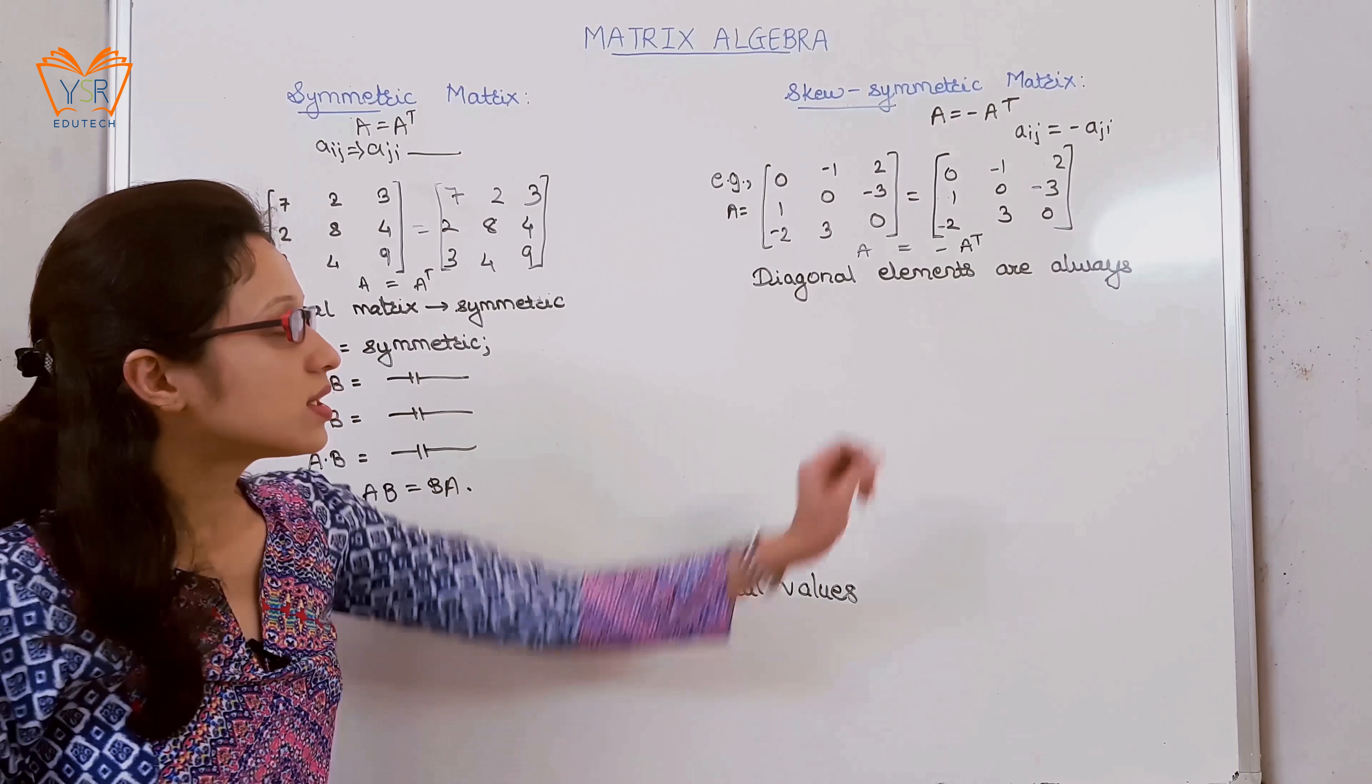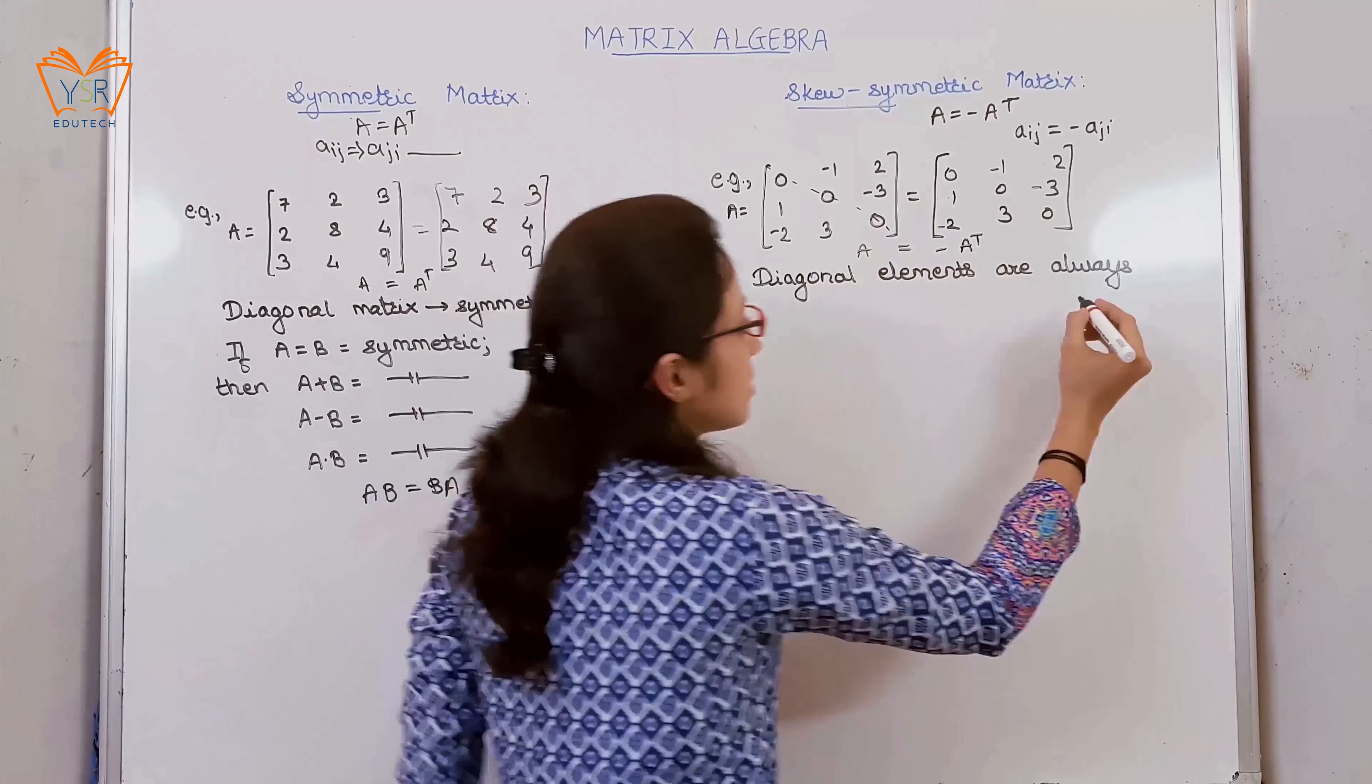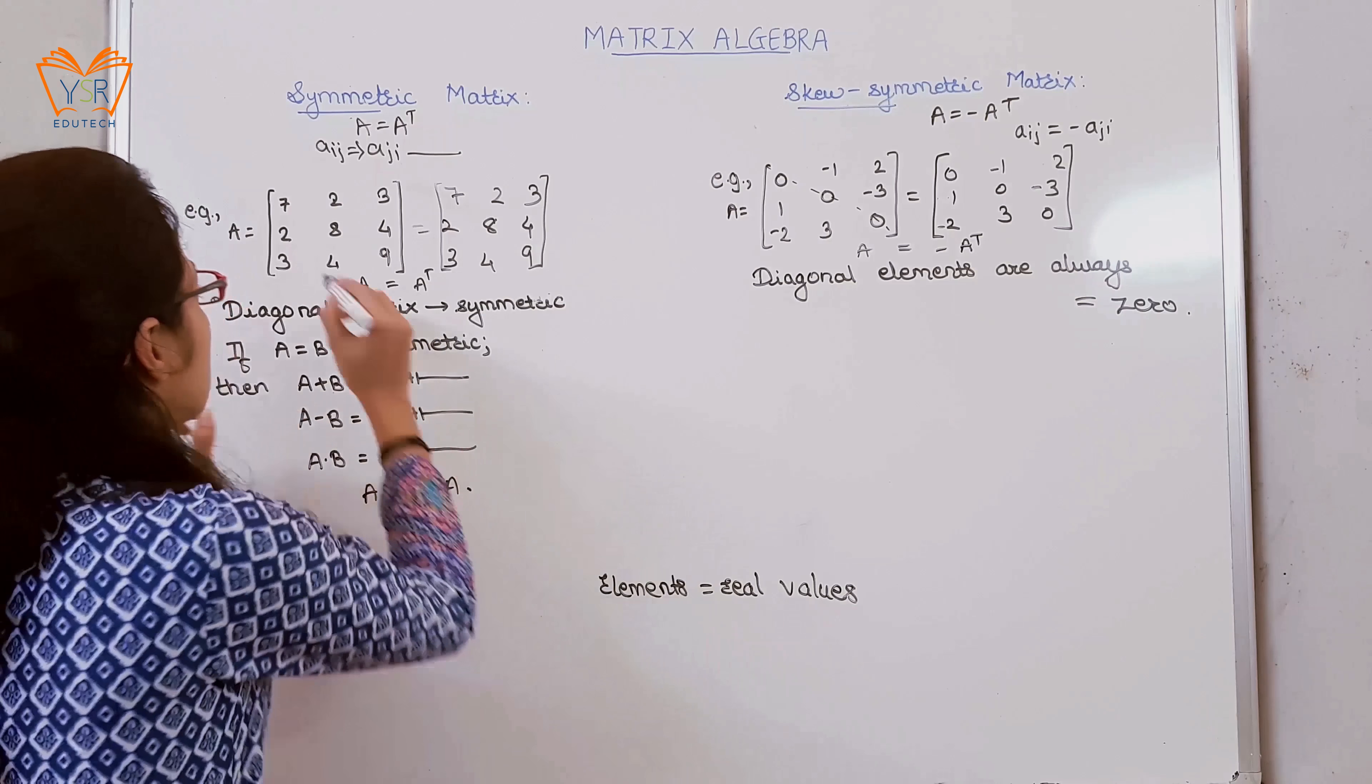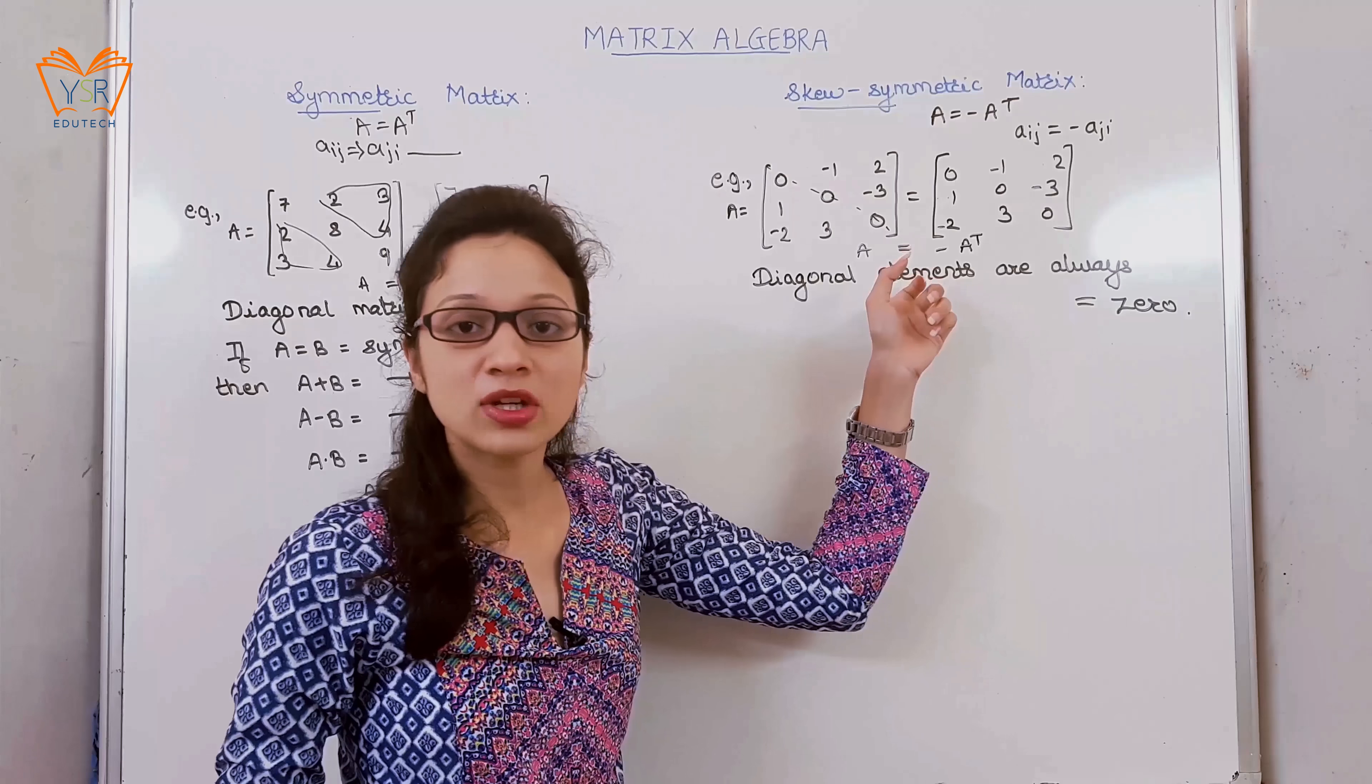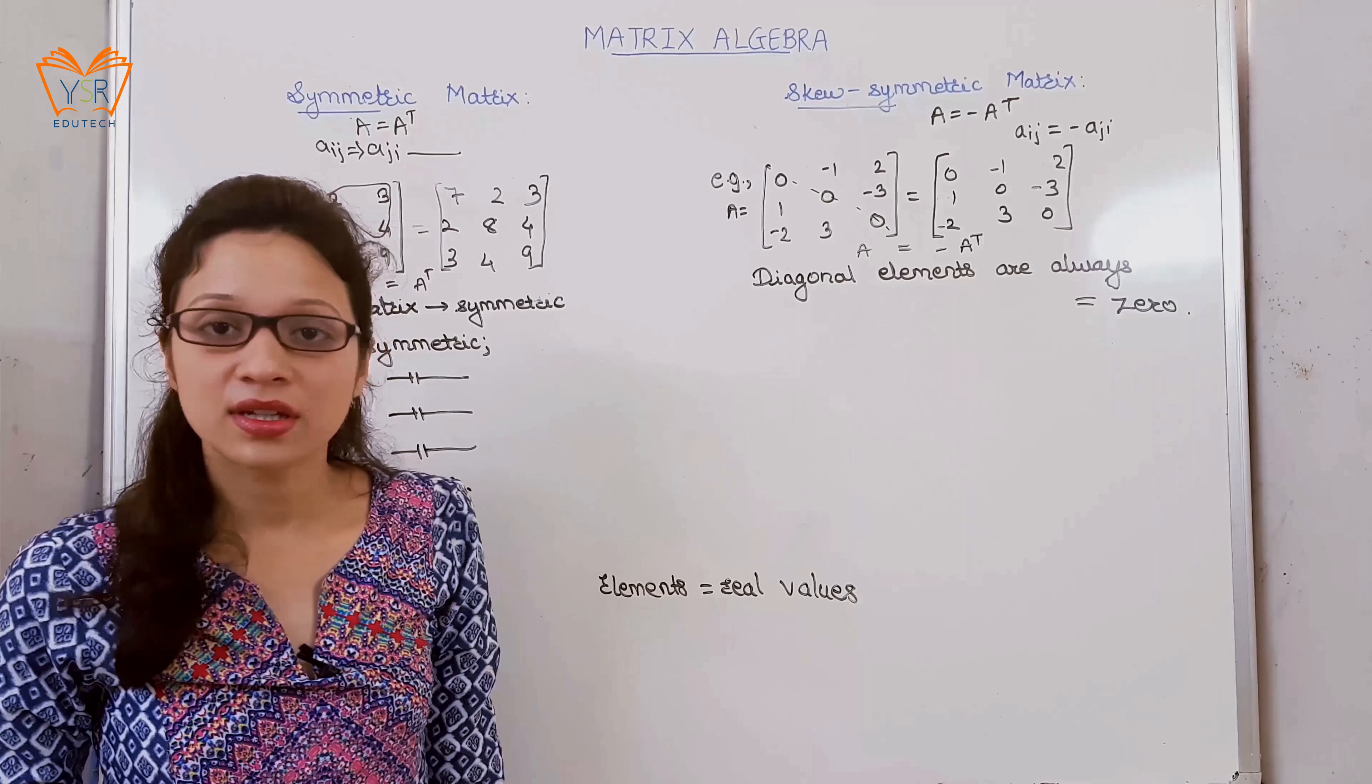Now all the diagonal elements of the skew-symmetric matrix are always equal to 0. The lower part in the symmetric matrix is reflected in the upper part. This applies for the skew-symmetric also, but only the opposite sign should be reflected.